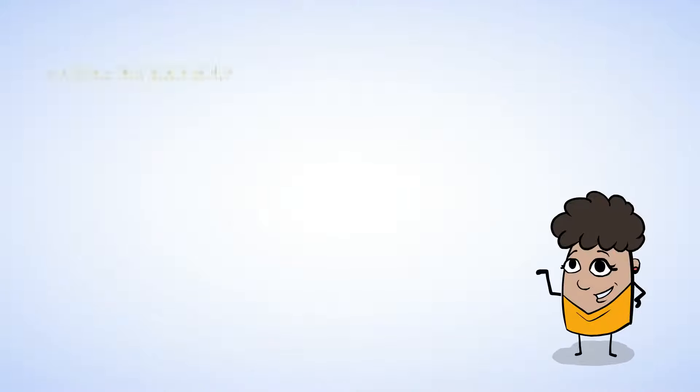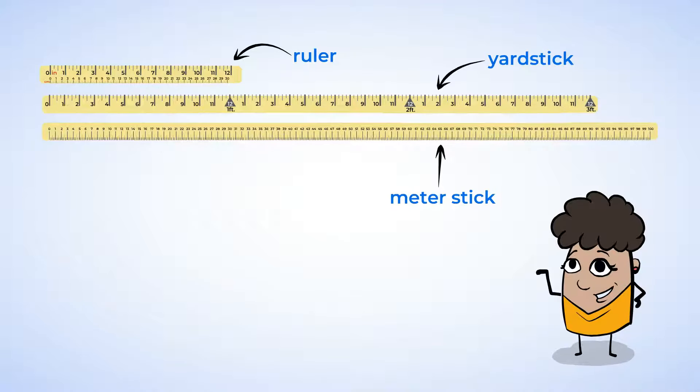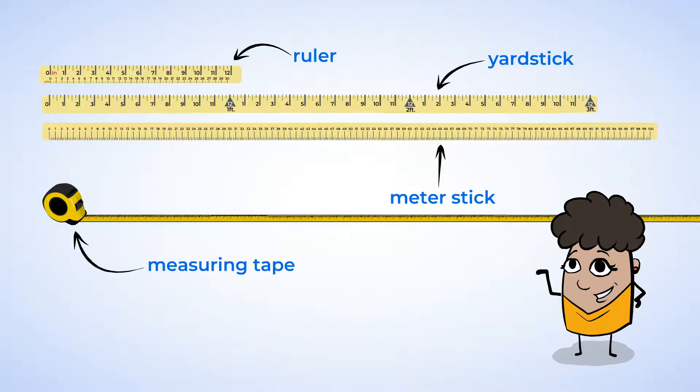Now the most important thing to remember is that rulers are the best for shorter objects. Meter sticks and yard sticks are best for longer objects. And measuring tapes are good for really long objects.